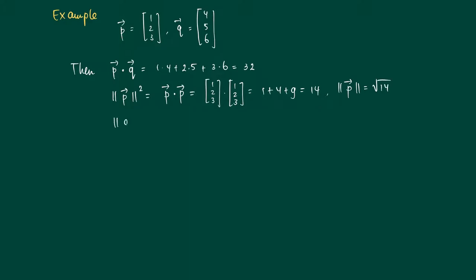In just the same way, we calculate the length of Q. The norm of Q is the square root of the inner product of Q with itself, so it's the square root of [4, 5, 6] inner product with [4, 5, 6], which equals the square root of 16 plus 25 plus 36, which equals the square root of 77.